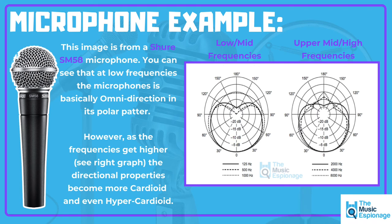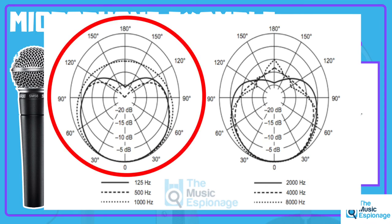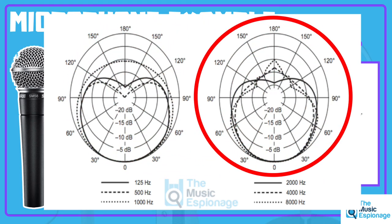Here's a common microphone example — the Shure SM58. On the right-hand side you can see two polar pattern diagrams. The left of the two circular graphs shows three frequencies: 125 Hz, 500 Hz, and 1000 Hz. The solid 125 Hz line shows a really exaggerated cardioid shape. The 2000 Hz line on the right diagram also shows a classic cardioid polar pattern when recording on axis.